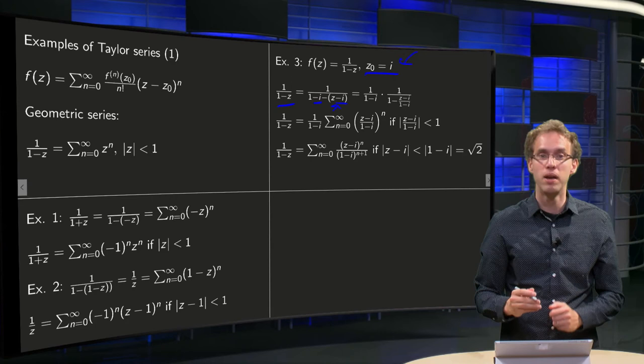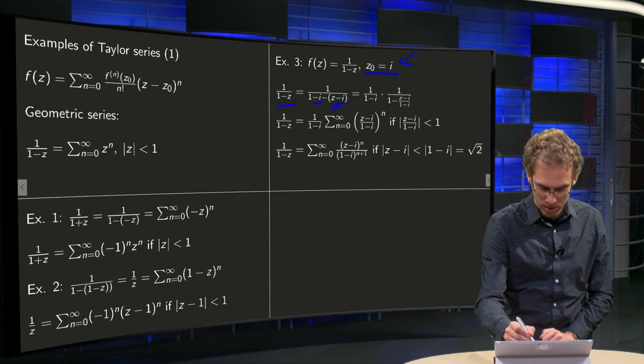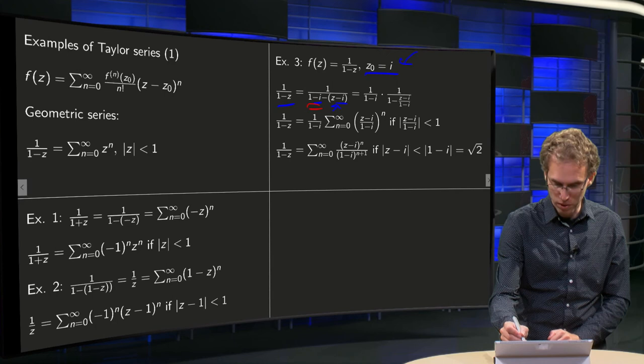But now we want something like 1/(1-rubbish). But we don't have a 1, we have a 1-i. Well, that's no problem. We can take it out. Then we get a 1/(1-i).